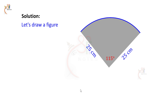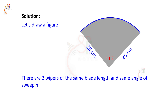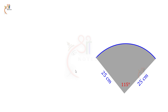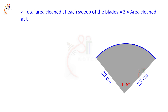This is a sector shape. The two wipers have the same blade length and the same angle of sweeping, and there is no area of overlap. So the total area cleaned at each sweep of the blades equals 2 times the area cleaned at the sweep of each single wiper.